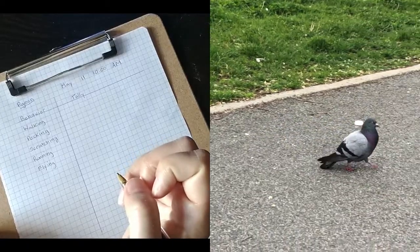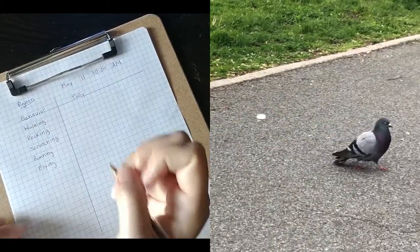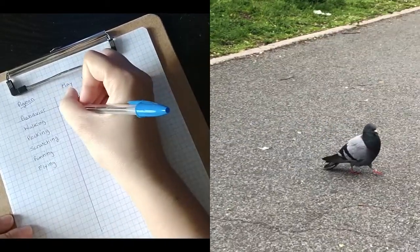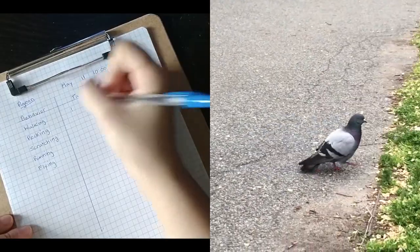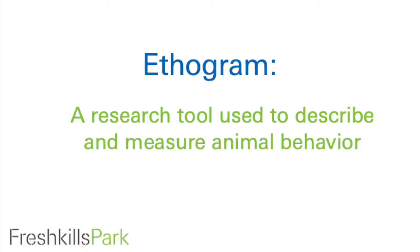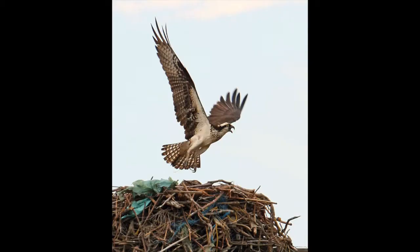Today, we're going to learn about how researchers observe animal behavior using a tool called an ethogram. Scientists who study animals use ethograms to describe and quantify animal activity. At Fresh Kills Park, we use ethograms to learn more about one of our favorite birds, the osprey.